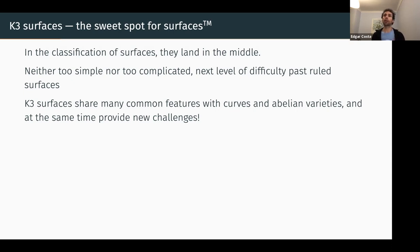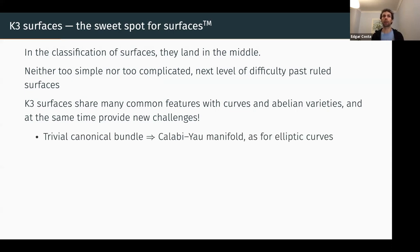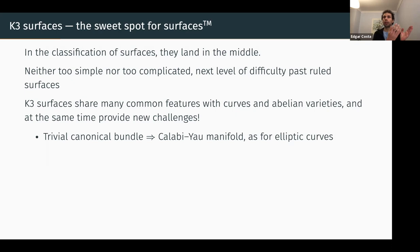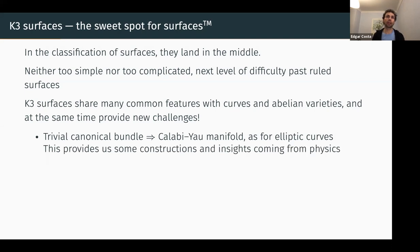Here are some features of the K3 surface you might want to know about. By my definition, they have a trivial canonical bundle, which just means they are Calabi-Yau manifolds, as is the case for elliptic curves. Calabi-Yau is relevant to physics — in the string theory world it somewhat explains how the universe behaves. So from physics we can bring a lot of insights.